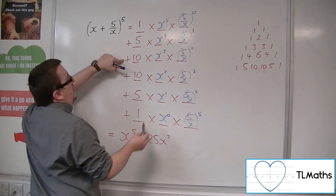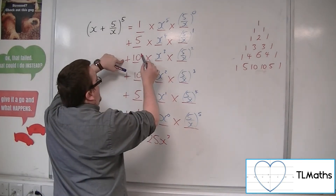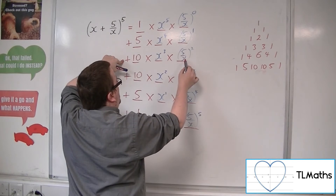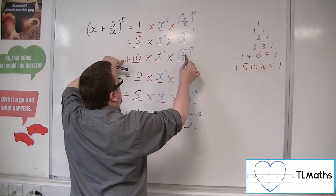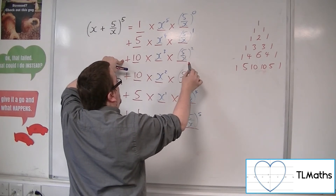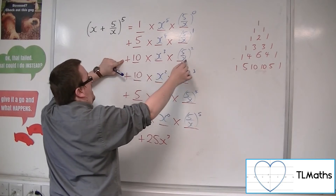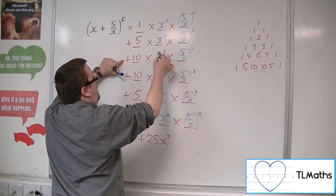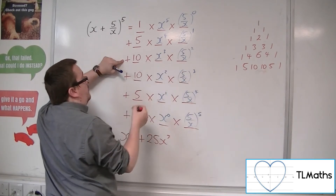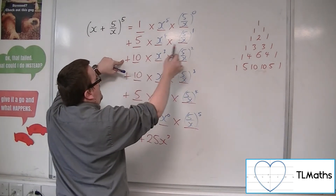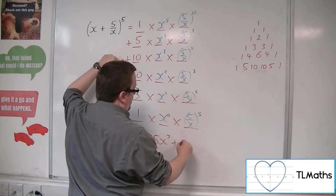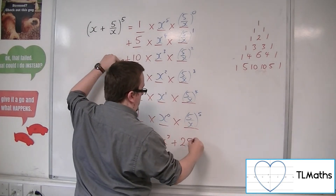For this term, we've got 10 times x cubed times (5/x) squared, so that's 25 over x squared. The x squared cancels, leaving just x — x cubed divided by x squared is just x. So we've got 10 times 25, which is 250x.